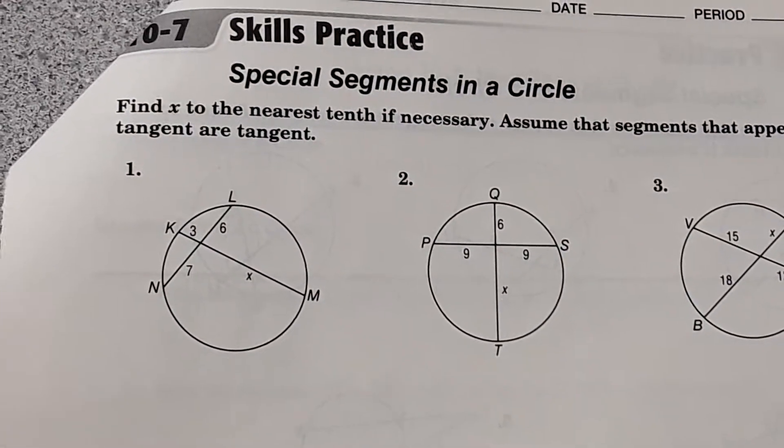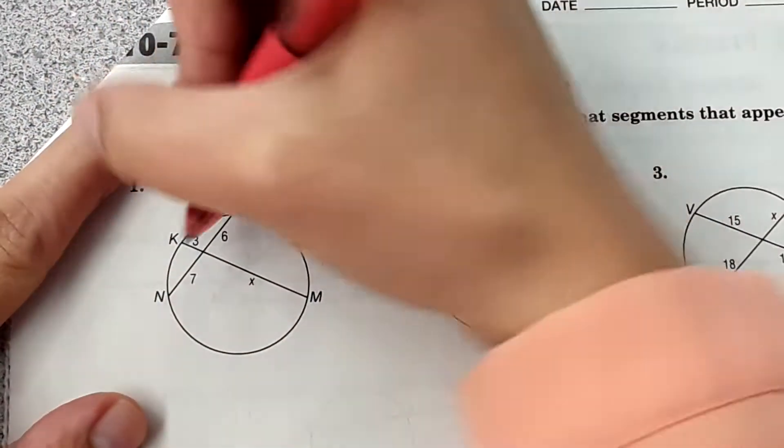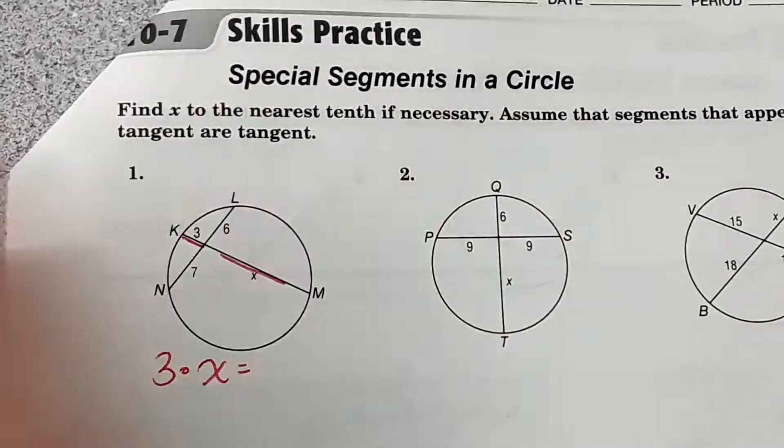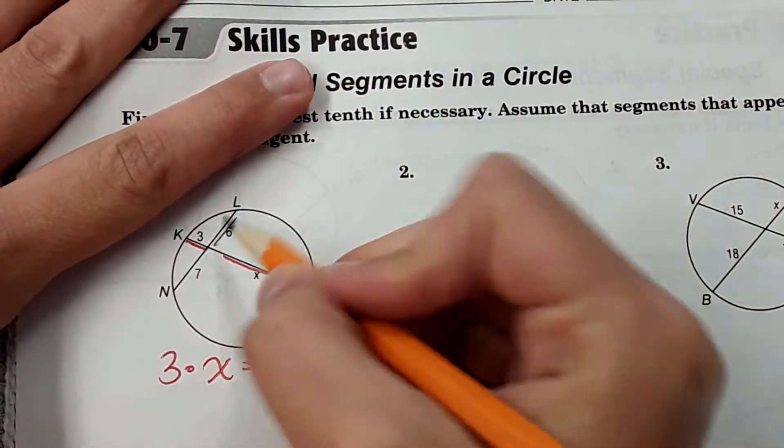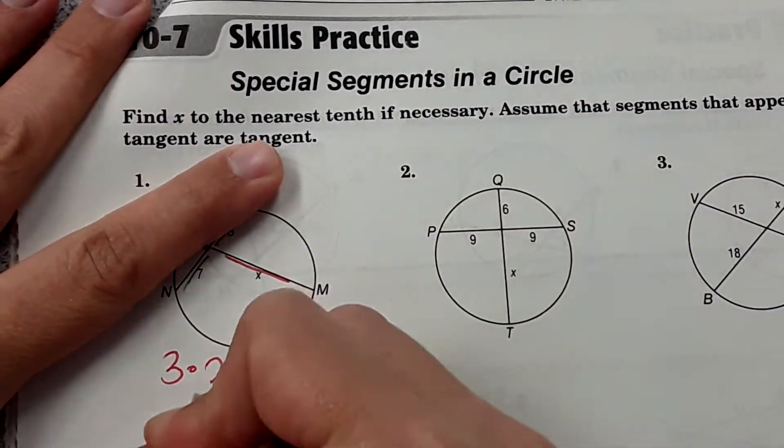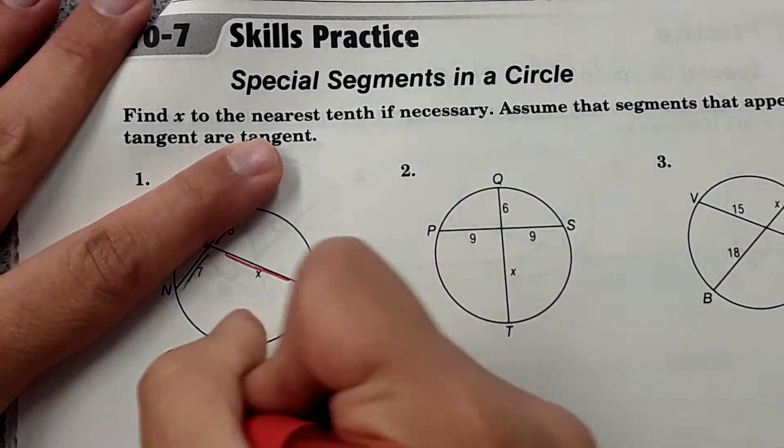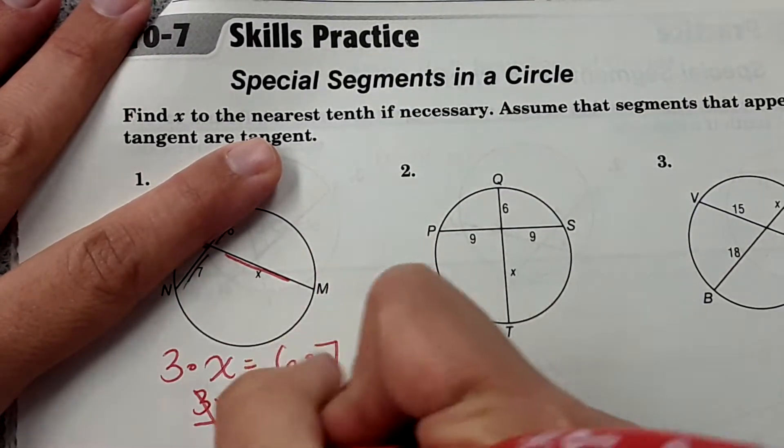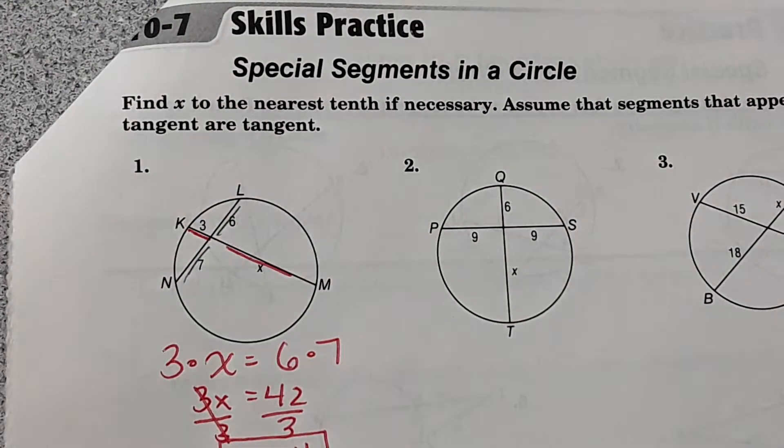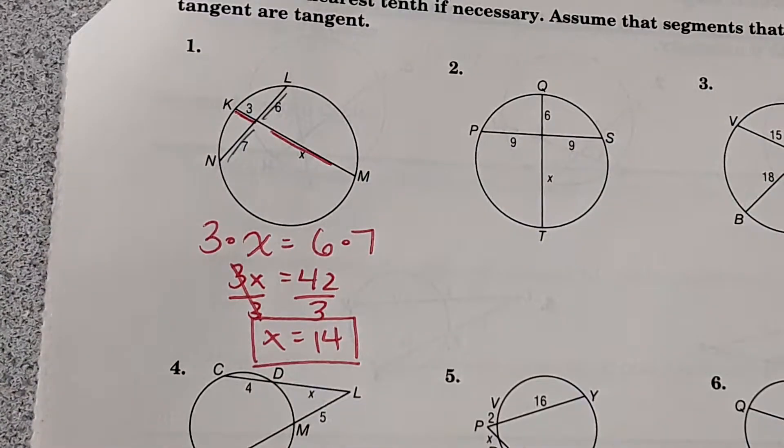It starts out really easy. We're just going to do all the easy ones first. Number 1 is going to be 3 times X equals 6 times 7. And then we can solve for X. 3X equals 42.